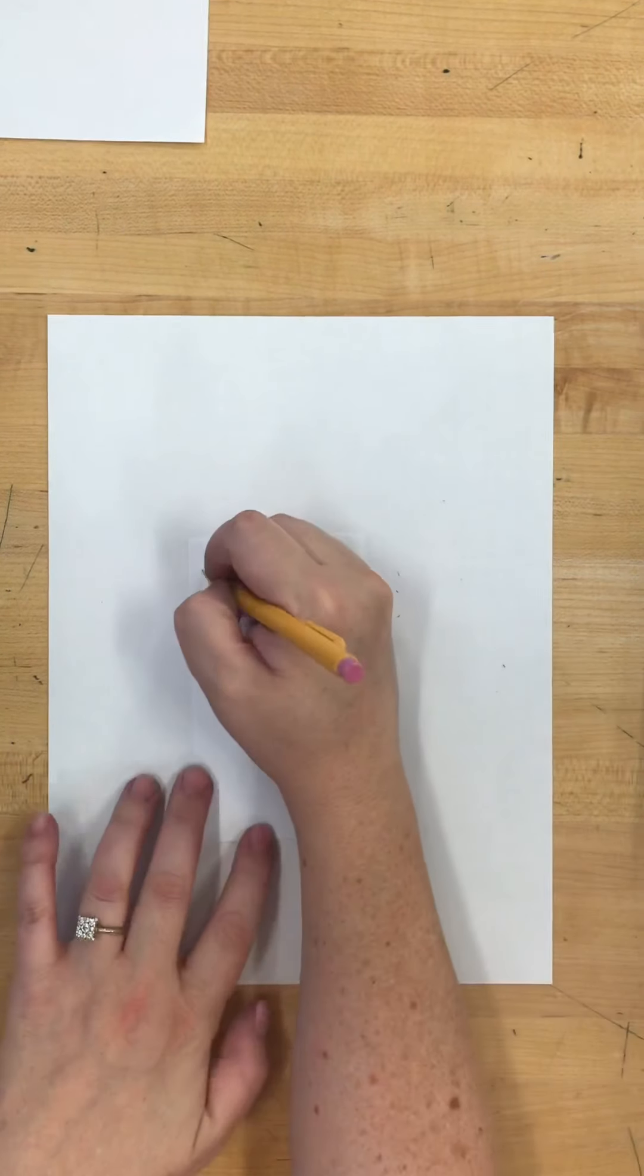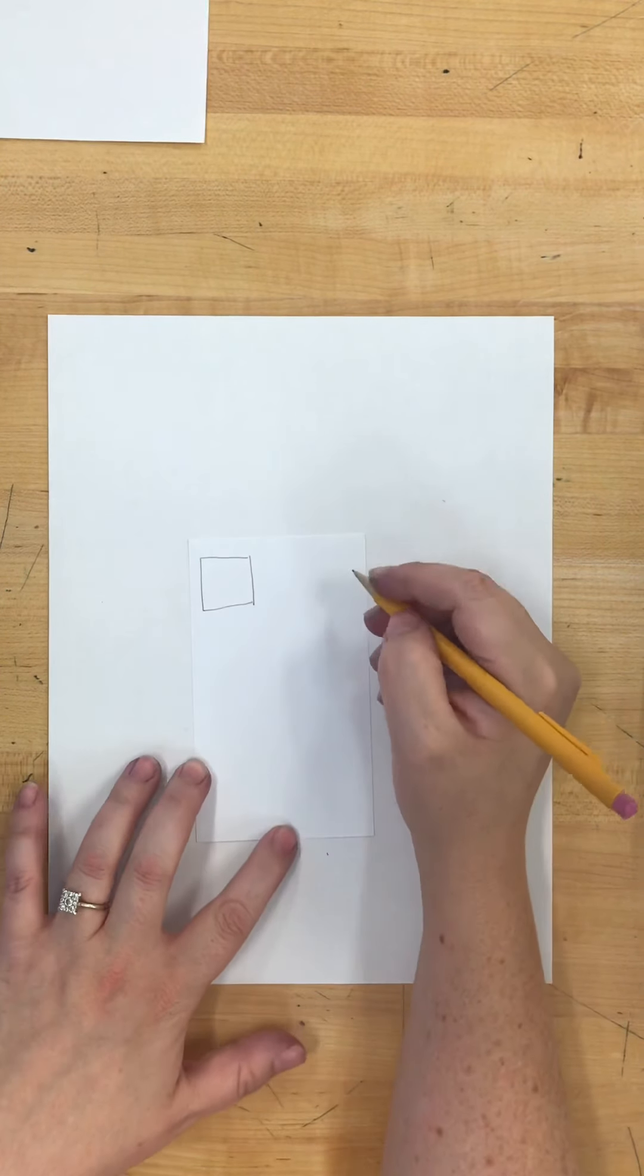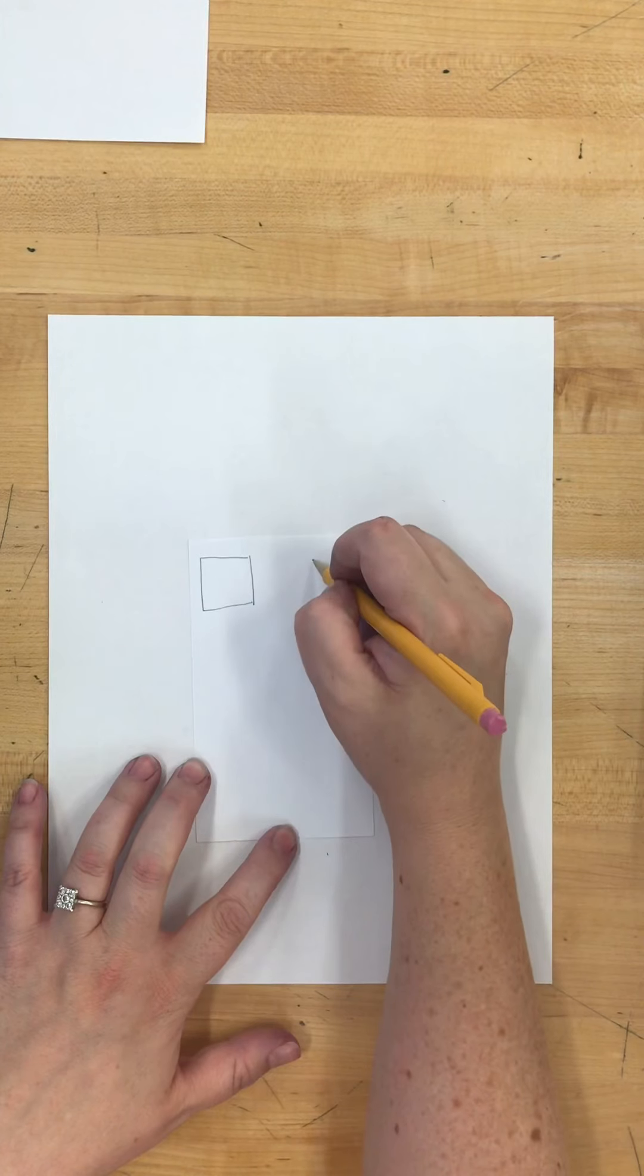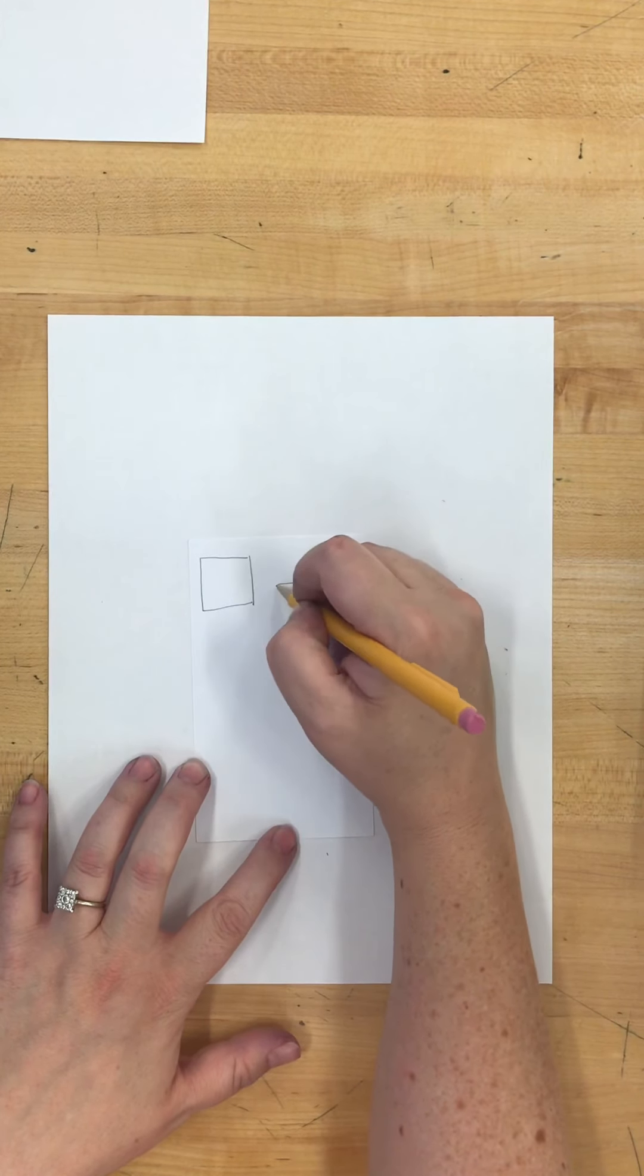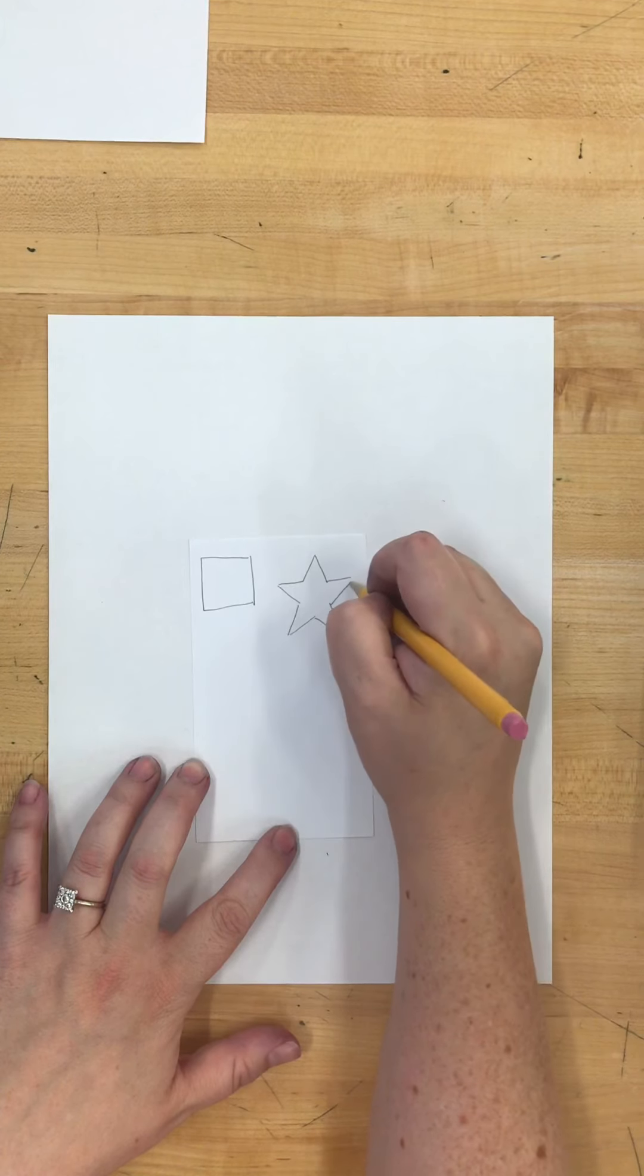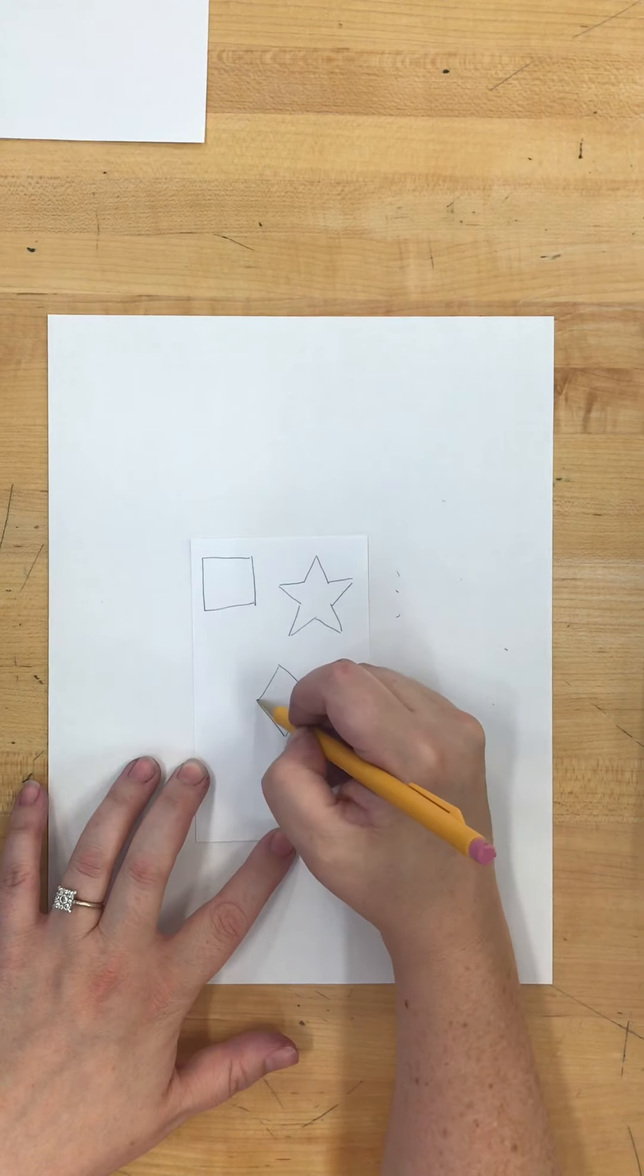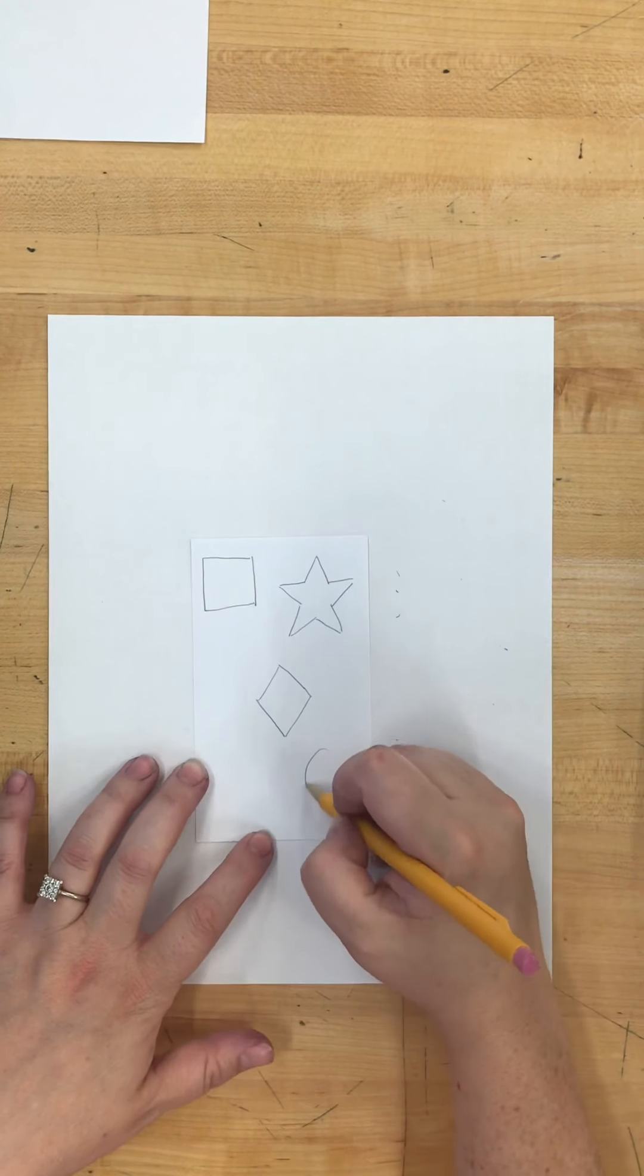So I started with the geometric shapes, the square, I did a star, I did a triangle, I did a circle.